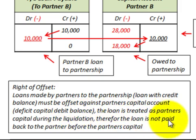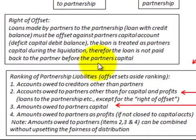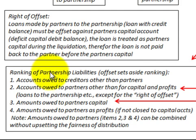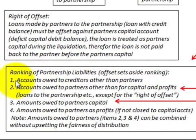Therefore, the loan is not paid back to the partner before the partner's capital amount. Let's look at the ranking of partnership liabilities and how this offset sets aside that ranking. Number one: accounts owed to creditors other than partners — they get paid first.